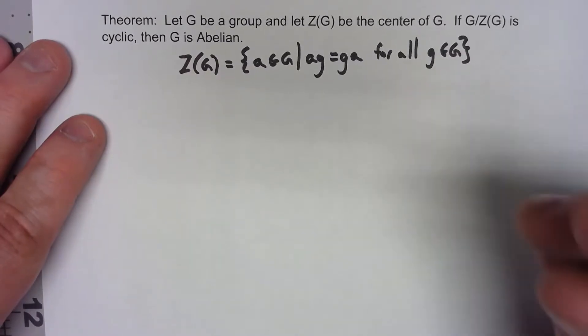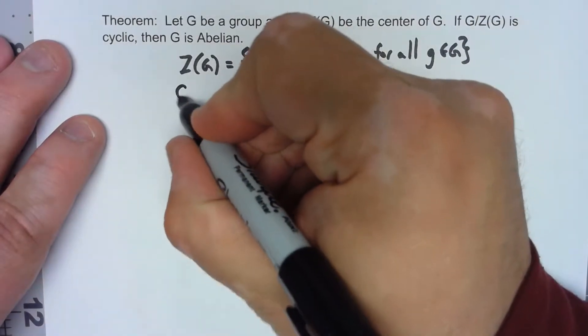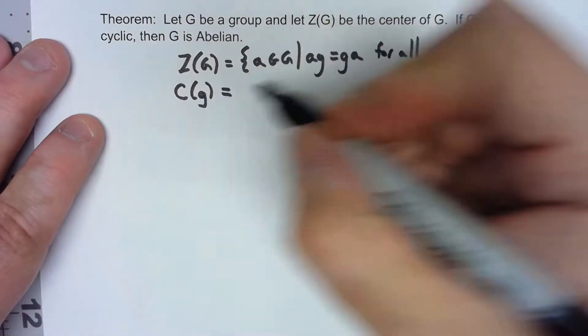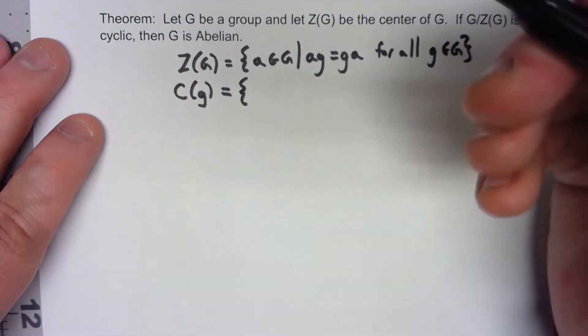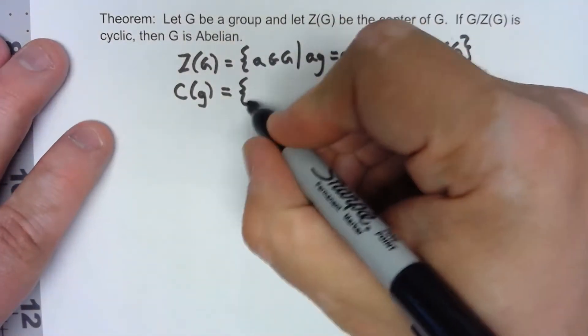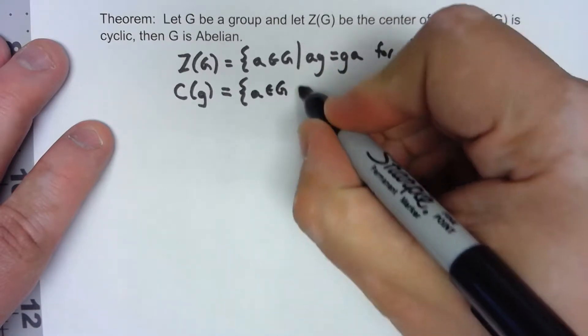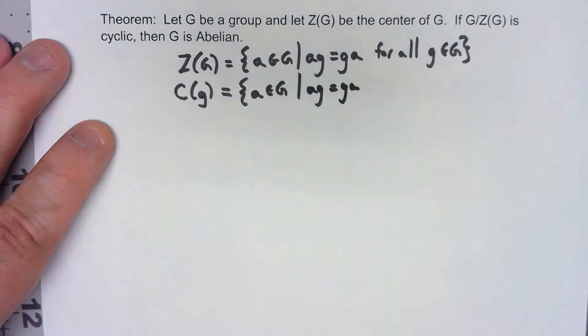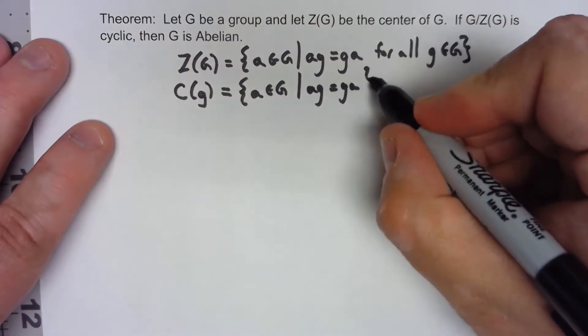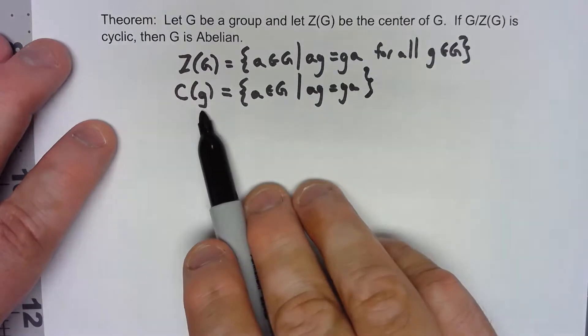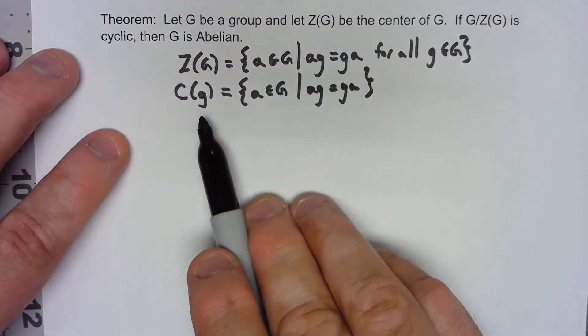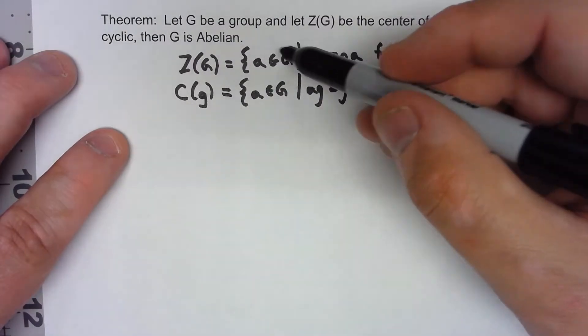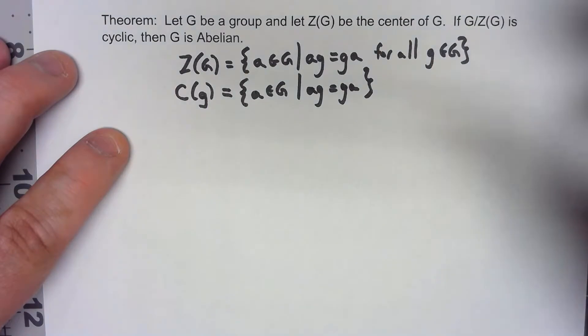Let's also, because it's going to be important in the proof, remember the centralizer of a group element. The centralizer of a group element is the set of all A in G such that AG equals GA, and that's it. So this is the things that commute just with G. The center of the group is the things that commute with everything else in the group.